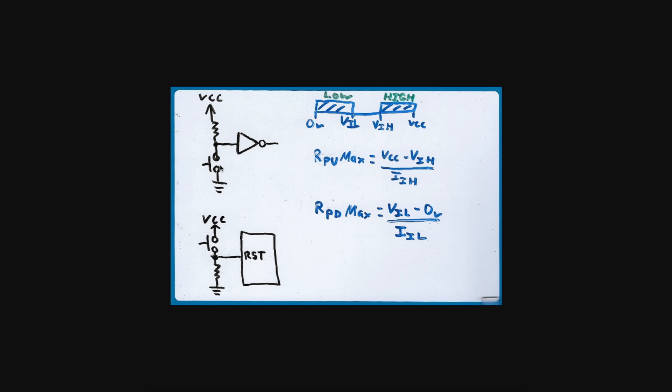Similarly, the switch contacts are going to have a maximum current capability, so we also have to make sure the current through this resistor and switch network doesn't exceed the ratings of the switch itself.